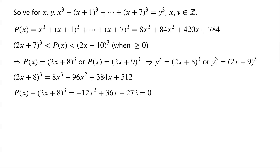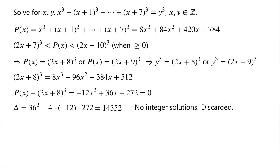That simplifies to negative 12x² plus 36x plus 272 equals 0. The discriminant of this quadratic equals 36² minus 4(−12)(272), which equals 14,352, which is not a perfect square. So this quadratic equation has no integer solutions.